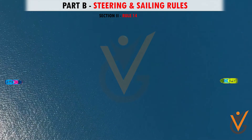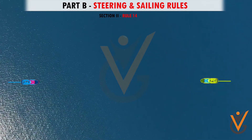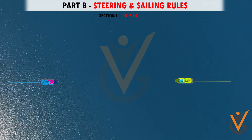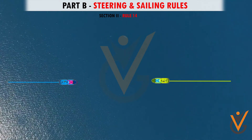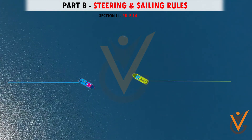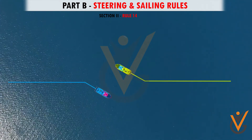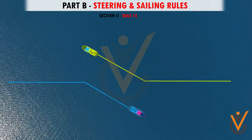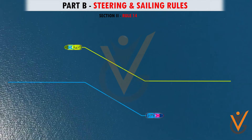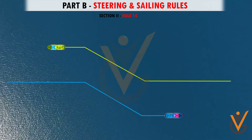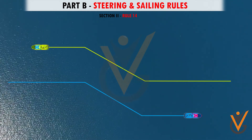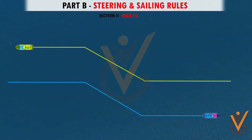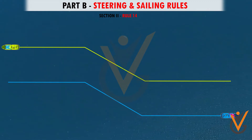Rule 14: When two power-driven vessels are meeting on reciprocal or nearly reciprocal courses, each shall alter her course to starboard so that each passes on the port side of the other.